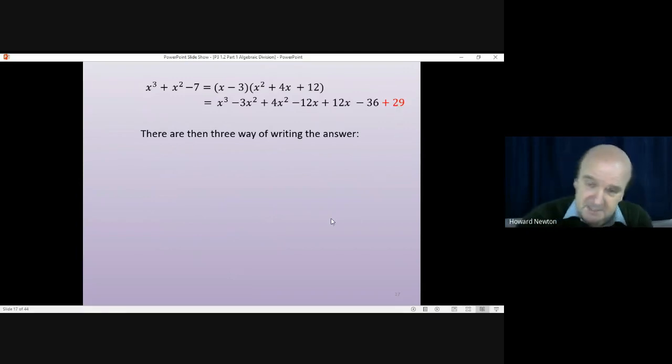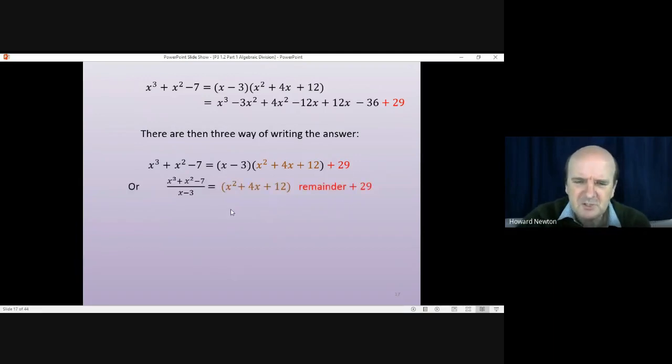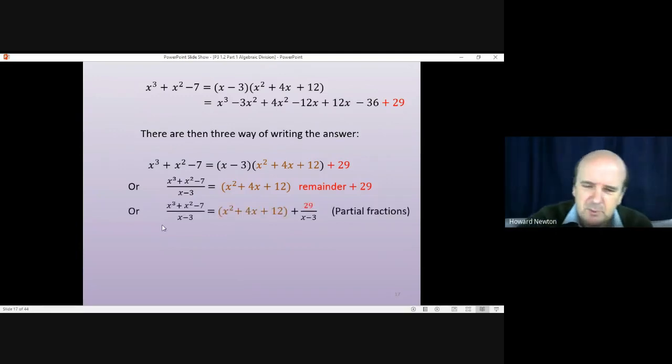There are then three ways of writing down the answer. You could write it down in the way that we started off writing it down. So x cubed plus x squared minus 7 is x minus 3 times by the quotient x squared plus 4x plus 12 plus the remainder plus 29. A more wordy fashion would be x cubed plus x squared minus 7 divided by x minus 3 equals the quotient with a remainder of 29. More important than that is this final method, which you'll see quite a lot when you're doing work on partial fractions. X cubed plus x squared minus 7 divided by x minus 3. Again it's equal to the quotient plus 29 divided by x minus 3. Now in terms of where this has come from, all we've done is go to the first line and divide everything by x minus 3, and then we have this line here.